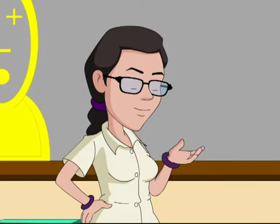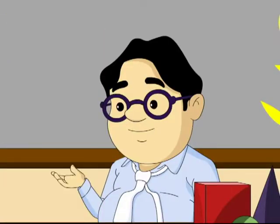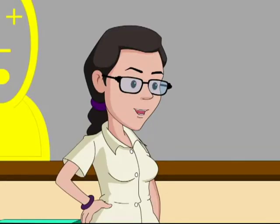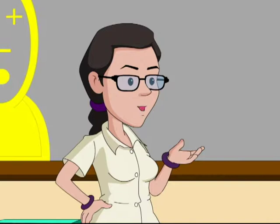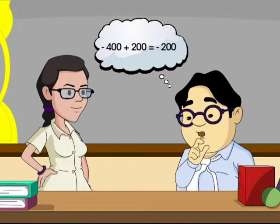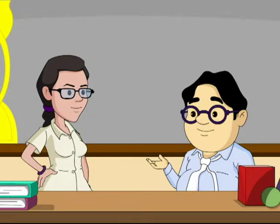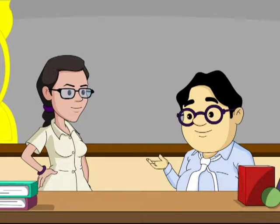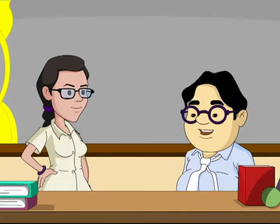The hero brought the submarine 200 feet up to fight the villains. Using the concept of addition of integers, minus 400 plus 200 equals minus 200. So the submarine was at a distance of minus 200 feet, that is 200 feet below the sea level. Snail then wonders: do we always get an integer when we add or subtract integers?